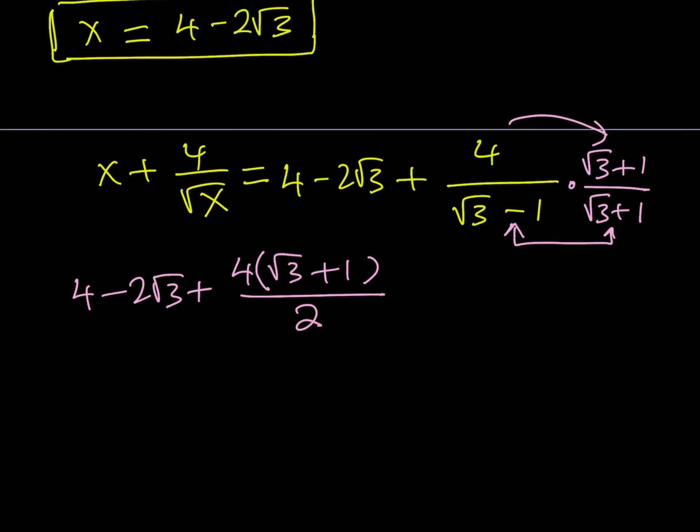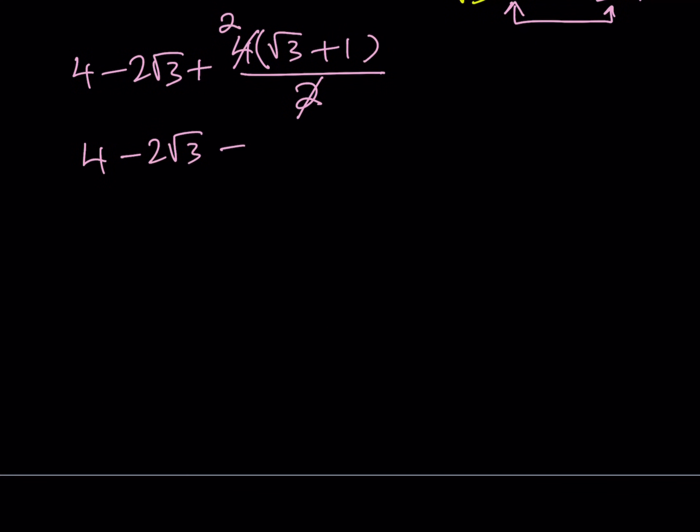So, now, 2 goes into 4, 2 times, so we can simplify. And now, this becomes 4 minus 2 root 3 plus, now, if you go ahead and distribute the 2 over here, you get 2 root 3 plus 2. And obviously, the negative 2 root 3 and the positive 2 root 3 are going to cancel out, giving us 6 as the final answer.